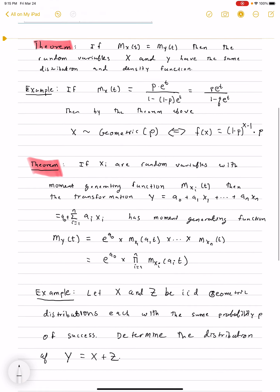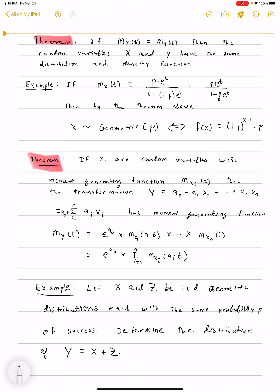This second theorem says if we have a bunch of X_i's that are random variables, and they need to be independent, then if you want to figure out the distribution of Y, which is a_0 plus a_1 X_1 plus adding up all those things through a_n X_n, also written in that second line as in summation formula.